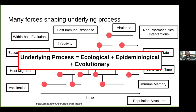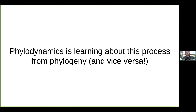This underlying process is a function of ecological, epidemiological, and evolutionary factors. All phylodynamics — and the broader set of phylogeographic and phylo-temporal inferences — is learning about this underlying process from the phylogeny, and vice versa, learning about the phylogeny by using information about the underlying process. The phylogeny is a sample of that process, and we use its shape to understand the dynamics.